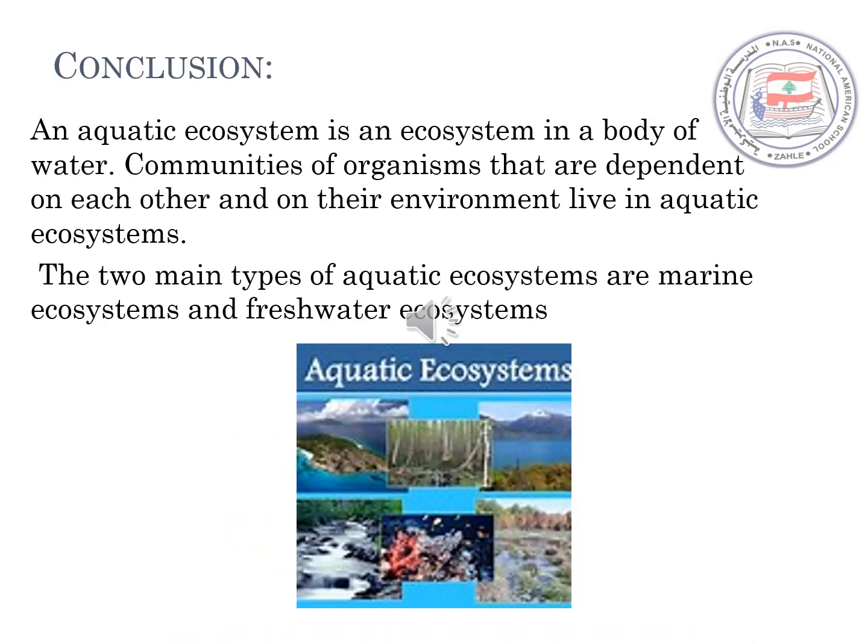As a conclusion, an aquatic ecosystem is an ecosystem in a body of water. Communities of organisms that are dependent on each other and on their environment live in an aquatic ecosystem. The two main types of aquatic ecosystems are marine ecosystems and freshwater ecosystems.